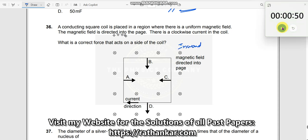Okay. The magnetic field is directed into the page, it is already given. There is a clockwise current in the coil, which means it is going like this.